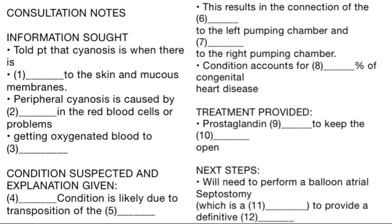Do you know what that is? No, tell me what it is. Transposition of the great arteries is a serious condition where the two main blood vessels leaving the heart — the pulmonary artery, which carries blood to the lungs to absorb oxygen, and the aorta, which takes blood from the heart to the body — are swapped over. That's to say, the pulmonary artery is joined to the left pumping chamber and the aorta to the right pumping chamber. This means that blood flows to the lungs and picks up oxygen, but is then pumped back to the lungs instead of travelling around the body.